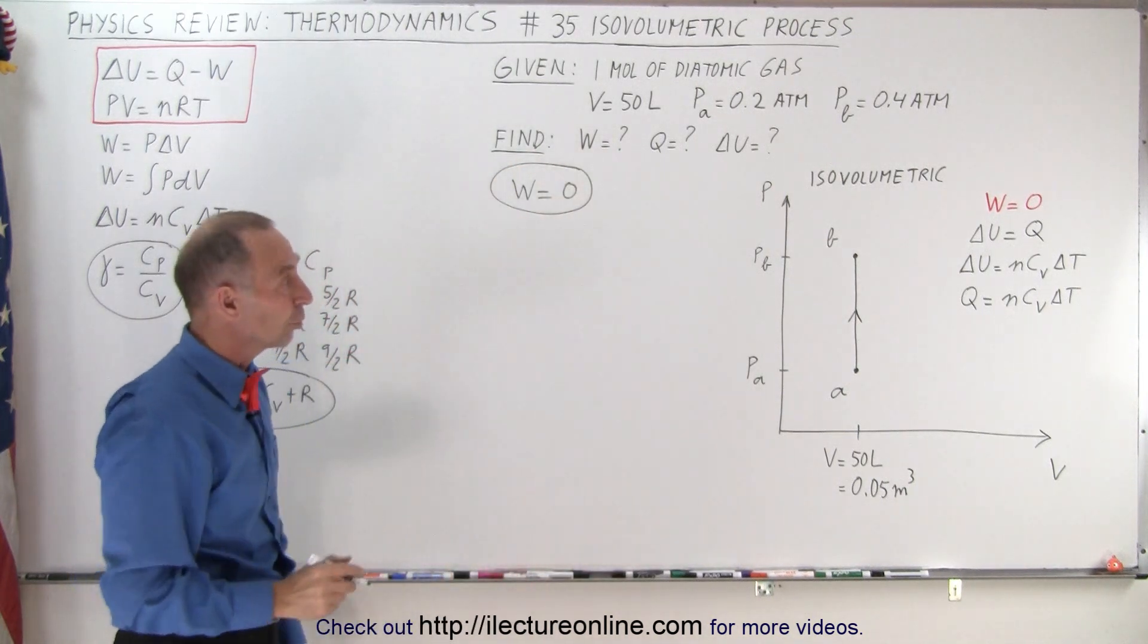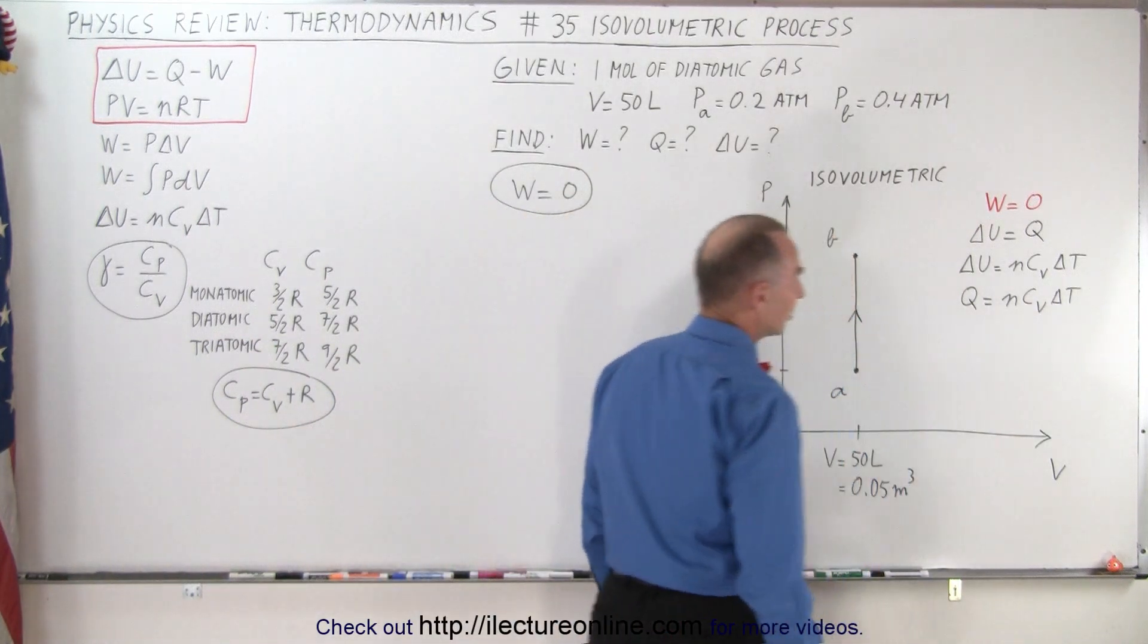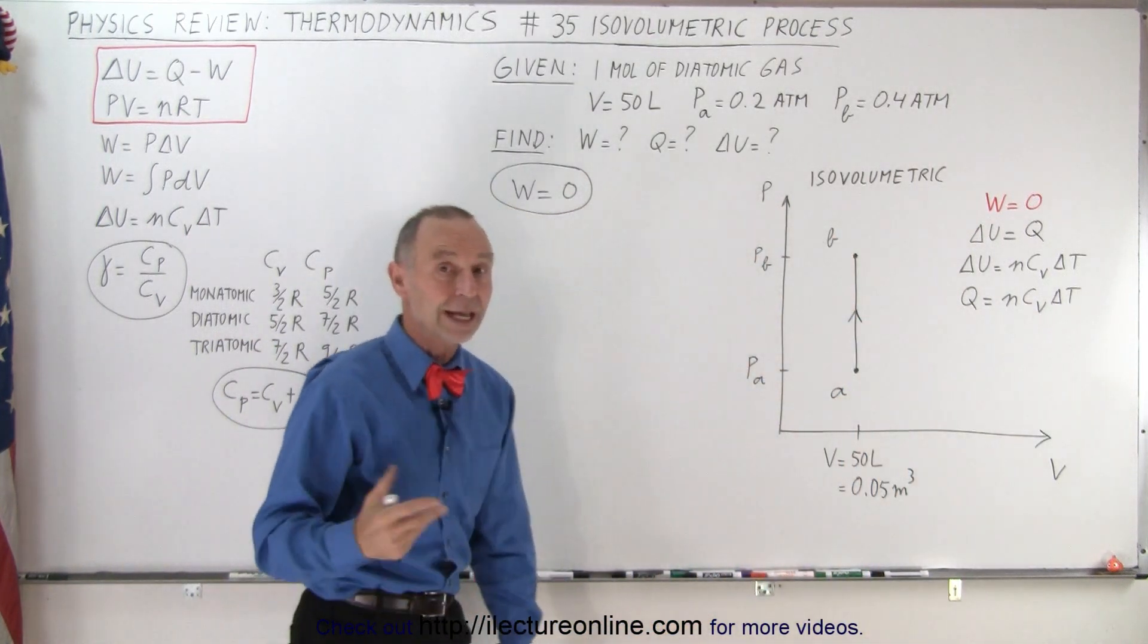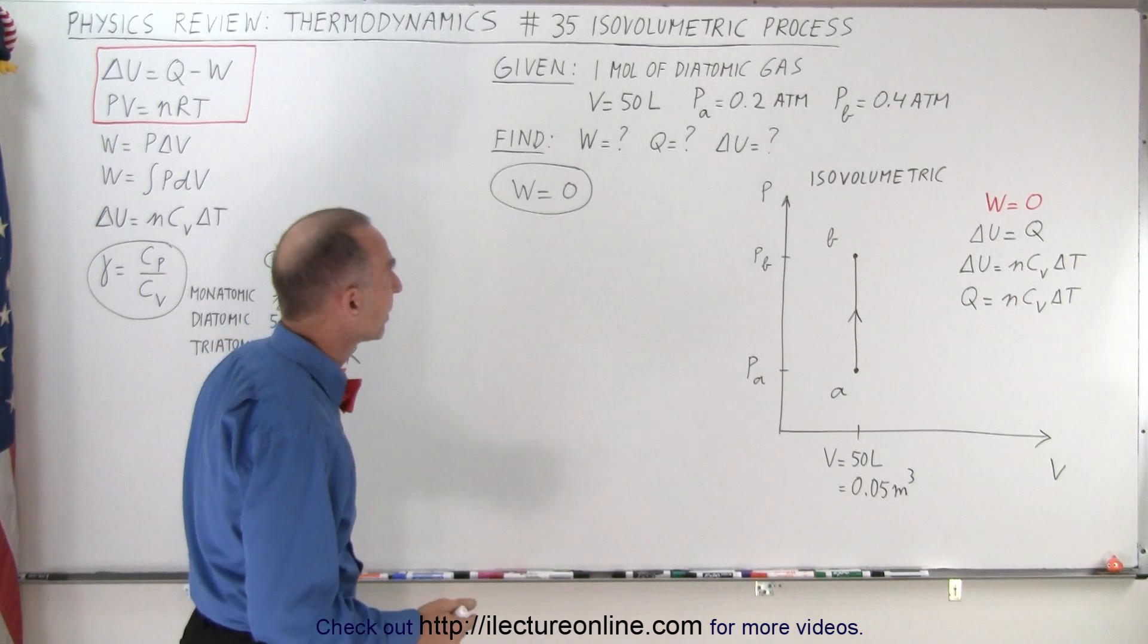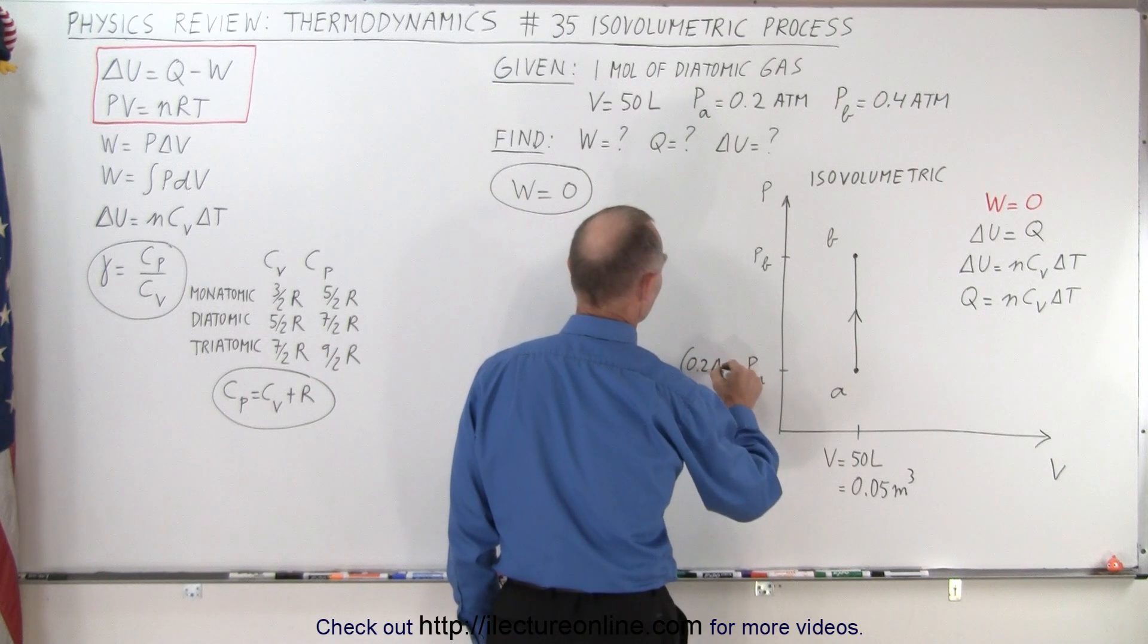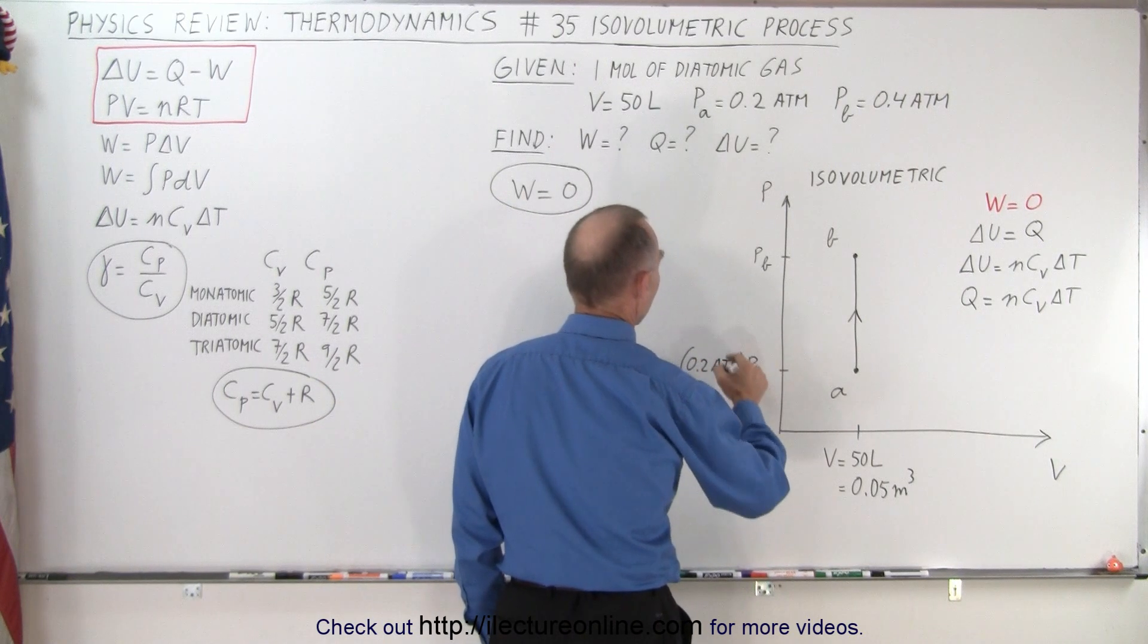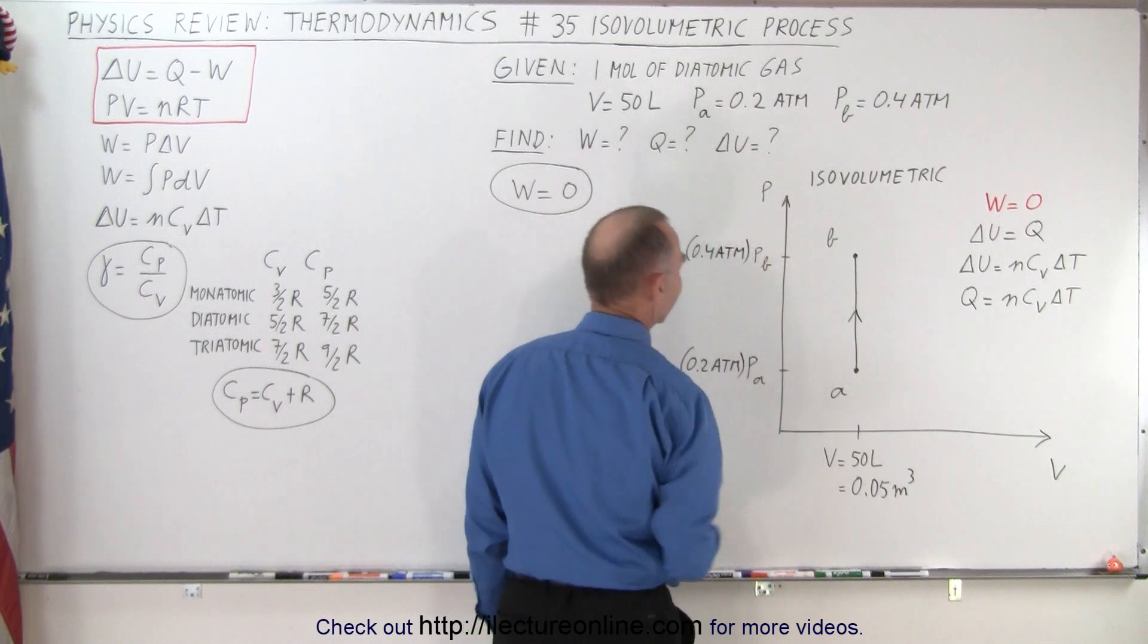Now ΔU. Notice to find ΔU we need to find the change in the temperature which means we need to find the temperature at A and we need to find the temperature at B. Now notice we're given the pressure at A, the pressure is 0.2 atmospheres at A and the pressure at B is 0.4 atmospheres. So it's exactly double.